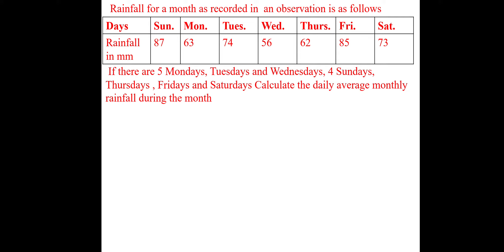Sunday, Monday, Tuesday, Wednesday, Thursday, Friday and Saturday: 87, 63, 74, 56, 62, 85, 73. There are 5 Mondays, Tuesdays, Wednesdays, 4 Sundays, Thursdays, Fridays and Saturdays.